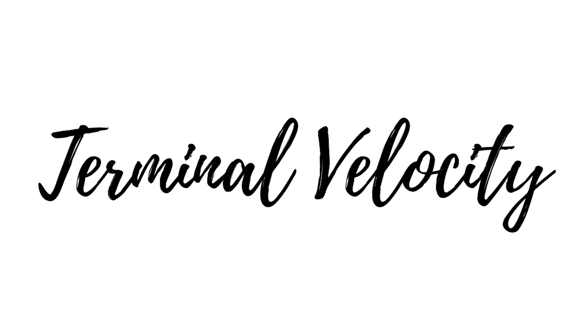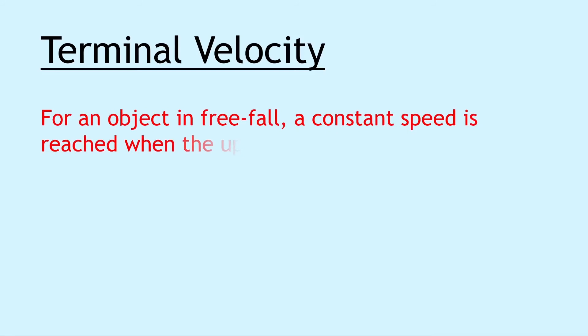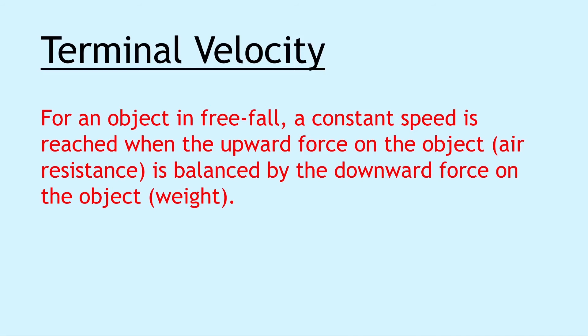Moving on we have terminal velocity, and this says that for an object in free fall, a constant speed is reached when the upward force on the object, i.e. the air resistance, is balanced by the downward force on the object, i.e. the weight. And terminal velocity is just another name for this constant speed.